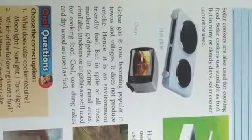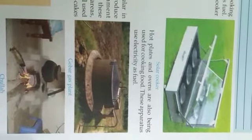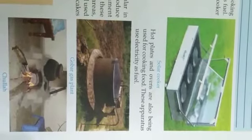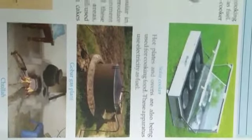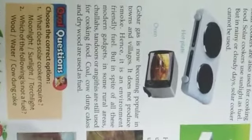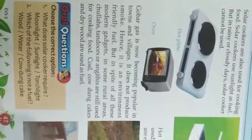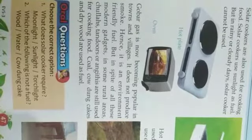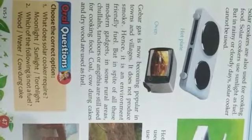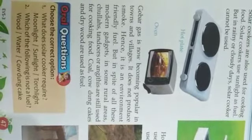Yahan solar cooker ka diagram dikha raha hai. Hot plates and ovens are also being used for cooking food — ye electricity ko as a fuel use karte hain. Gobar gas is now becoming popular in towns and villages. It does not produce smoke, hence it is an environment-friendly fuel — isliye environment friendly fuel hai.